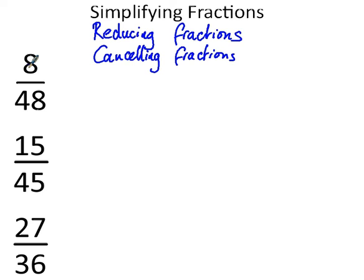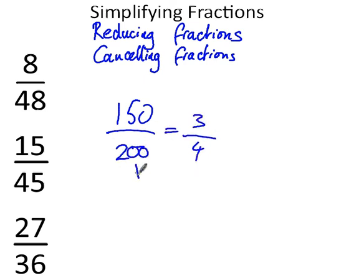For example, 150 over 200, when you simplify it, can be simplified down to three quarters. In my head, I'm not very good at picturing something divided into 200 pieces and then considering only 150 of them. I can picture, though, what three quarters looks like, and that makes it far easier for me to make comparisons with other fractions.